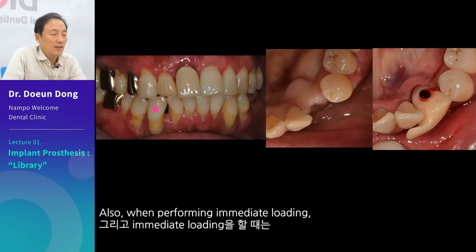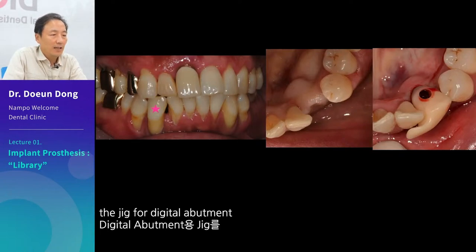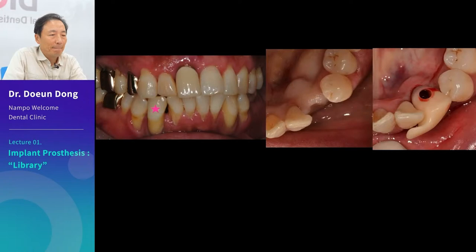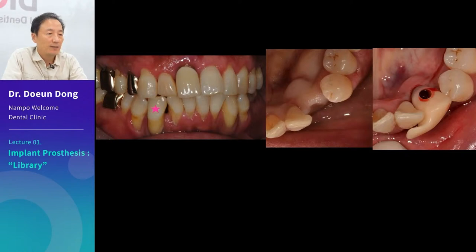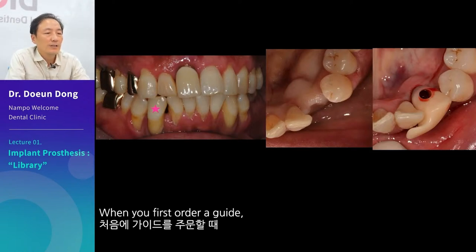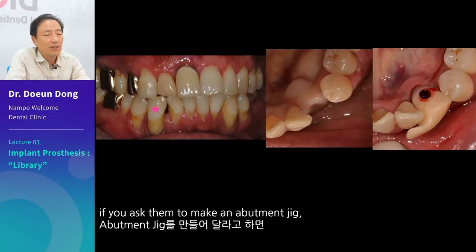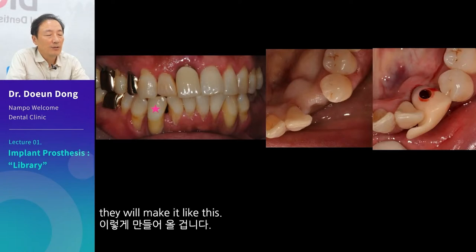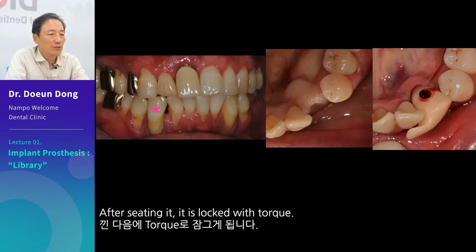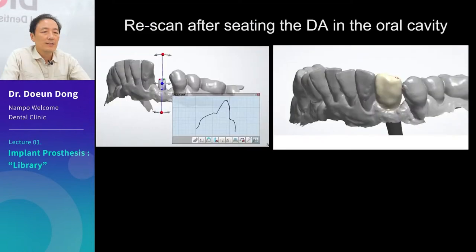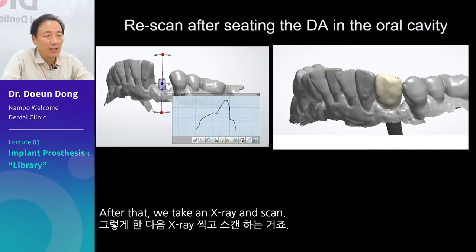Also, when performing immediate loading, the jig for digital abutment is printed with a 3D printer and inserted together. When you first order a guide, if you ask them to make an abutment jig, they will make it like this. This is a tool to check if the hexa has been inserted in the right direction. After seating it, it is locked with a torque. After that, we take an X-ray and scan.